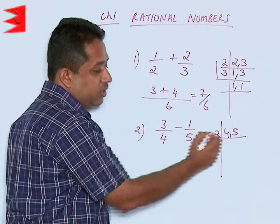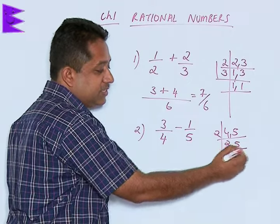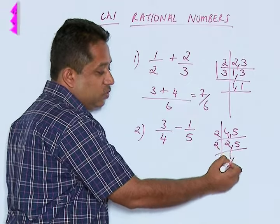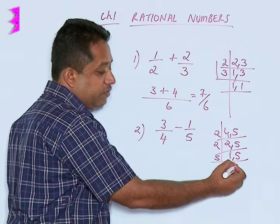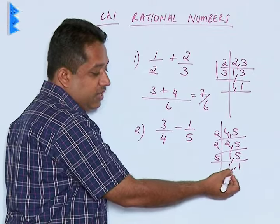Starting with the prime number, lowest prime number 2, we get 2, 2s are 4, 5 remains as it is, then 2, 1s are 2, 5 remains as it is and then finally 5 goes 1s are. So the process is finished here because we are left with 1 and 1.